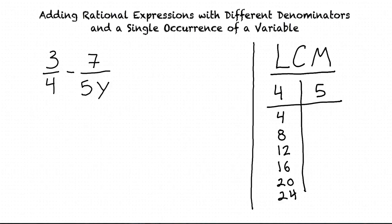And some multiples of 5 are 5, 10, 15, 20, 25, and 30. From these two lists, we can see that the smallest number that's a multiple of both 4 and 5 is 20. So 20 is the least common multiple of our constants in the denominators.